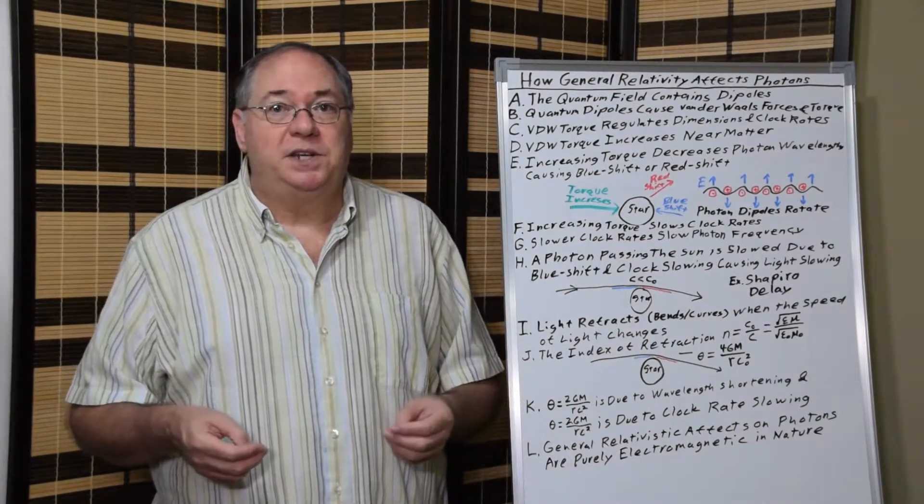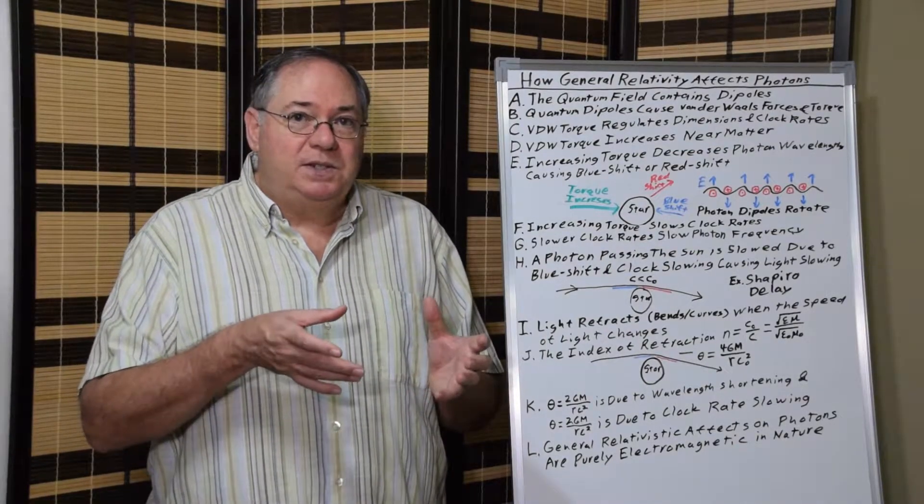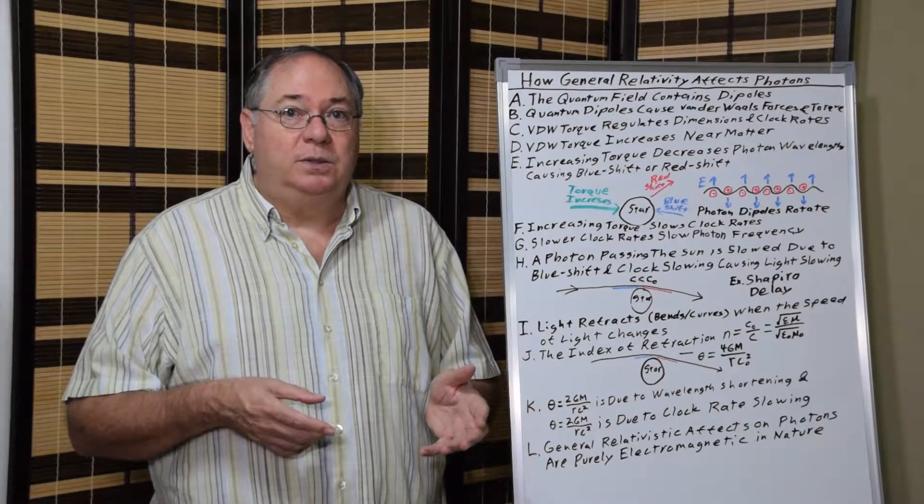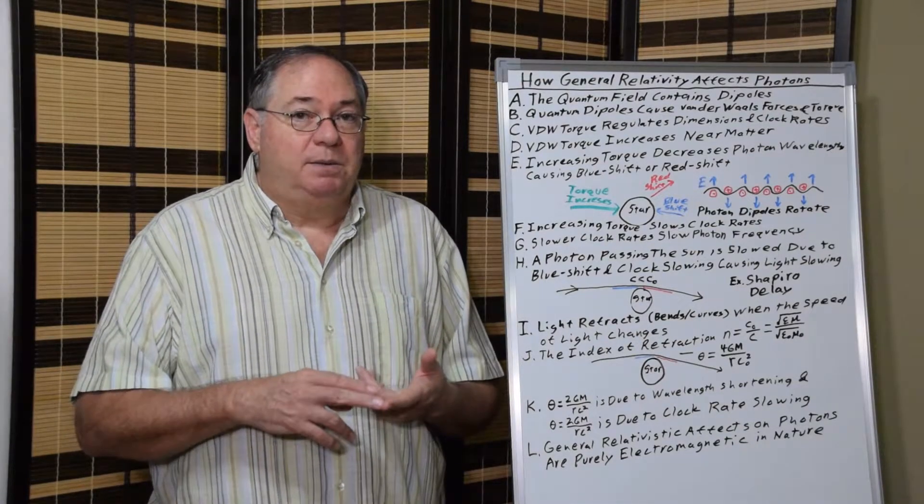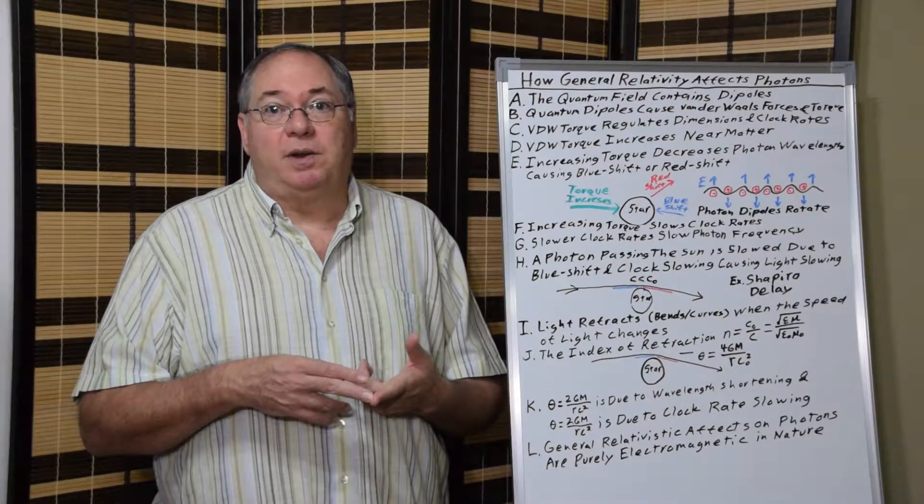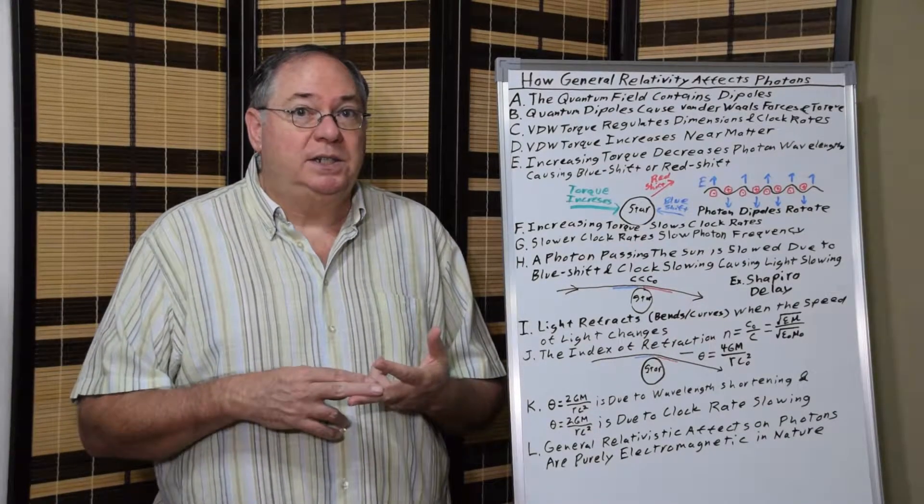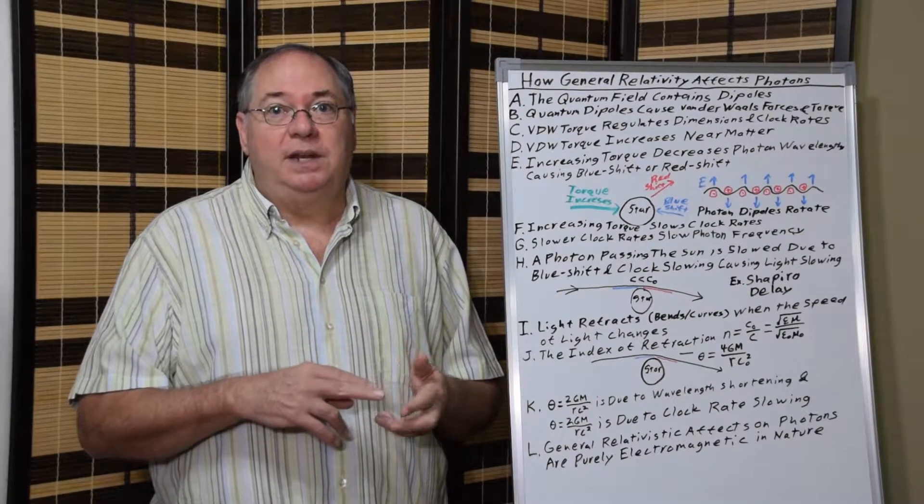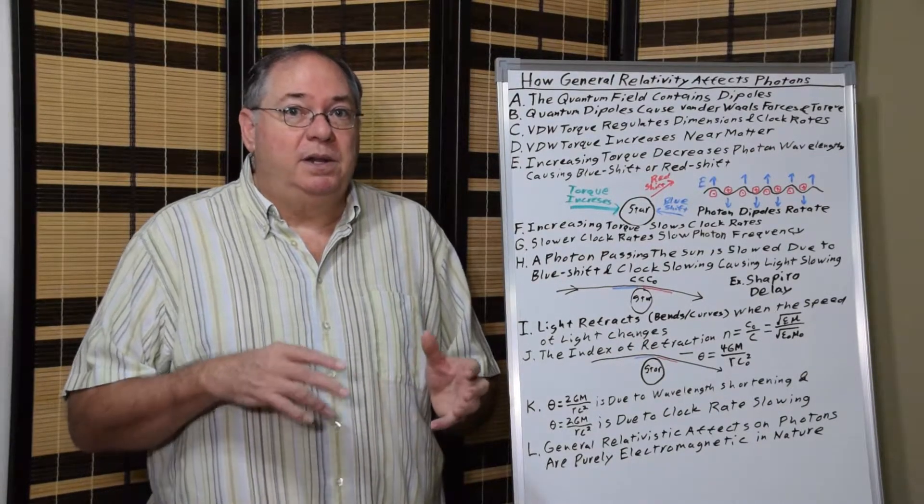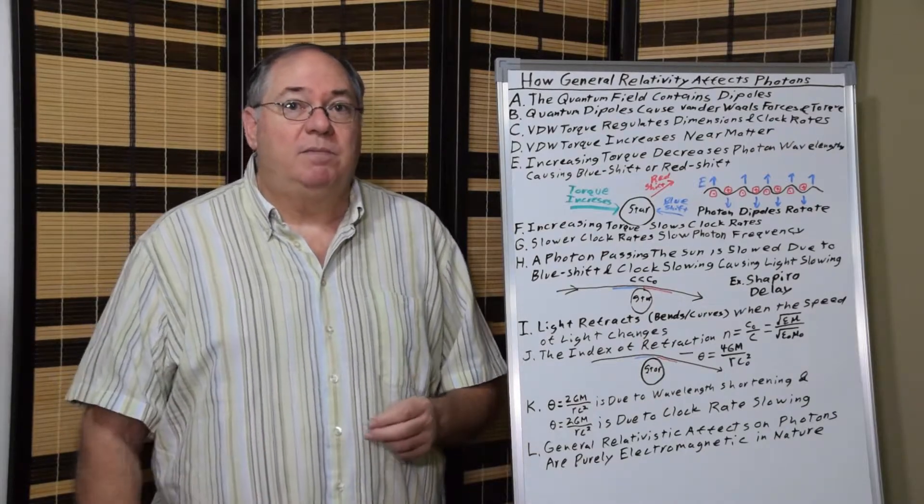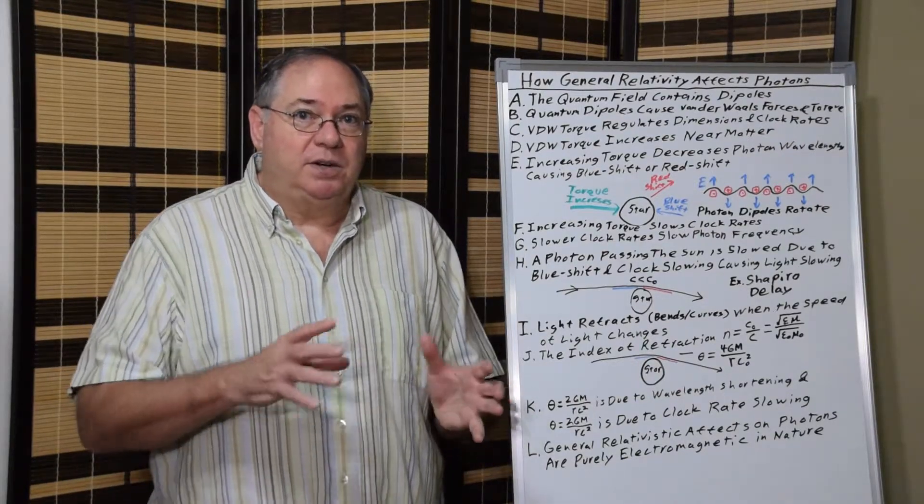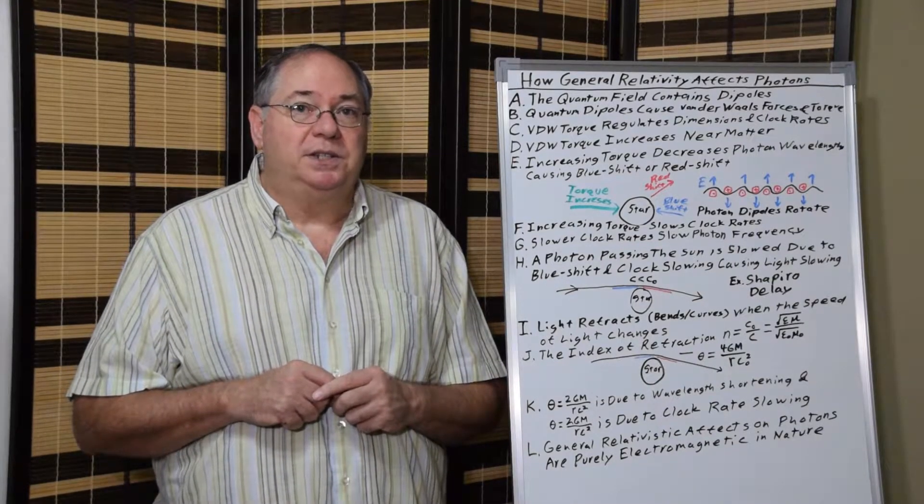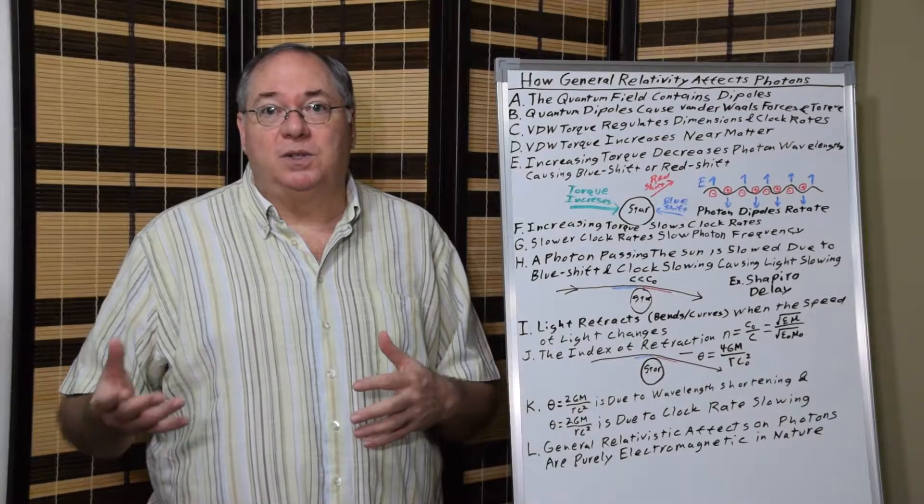So you have this regulating mechanism that regulates rotation of the dipoles, which regulates polarization when electric fields form and magnetization when magnetic fields form. The electric constant permeability and magnetic constant permeability arise from the quantum field because of the restrictions and regulation of the rotation due to van der Waals torque.